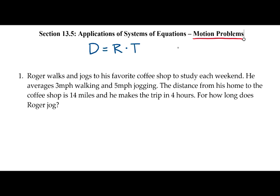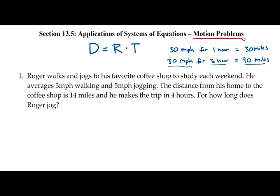For example, if you're in a car traveling 30 miles per hour, the rate of 30 miles per hour means each hour you travel 30 miles. So if you're driving at 30 miles per hour for one hour, you travel 30 miles. But if you're traveling 30 miles per hour for three hours, each hour is 30 miles, so in three hours you travel 30 times 3, or 90 miles. Speed times time equals distance — rate times time equals distance.